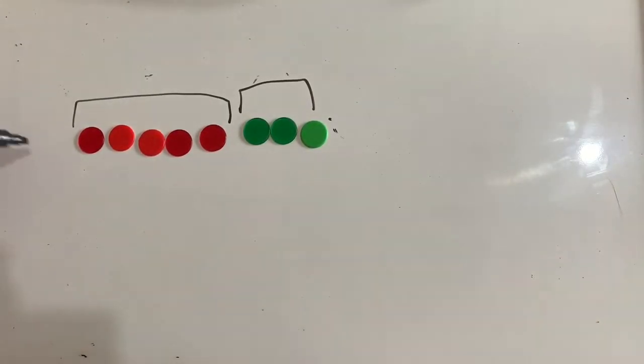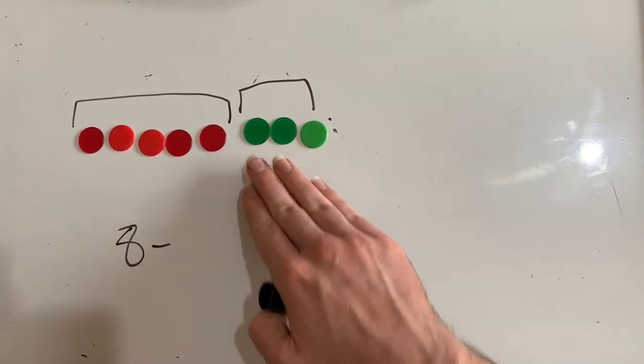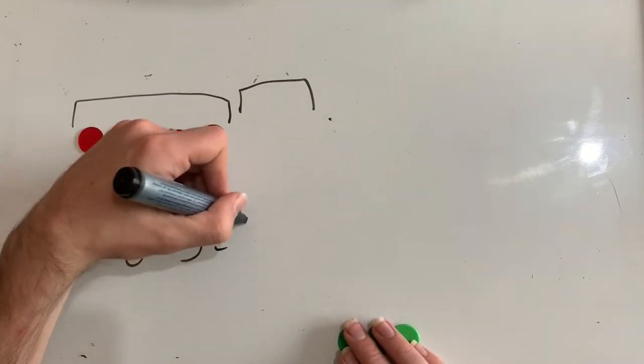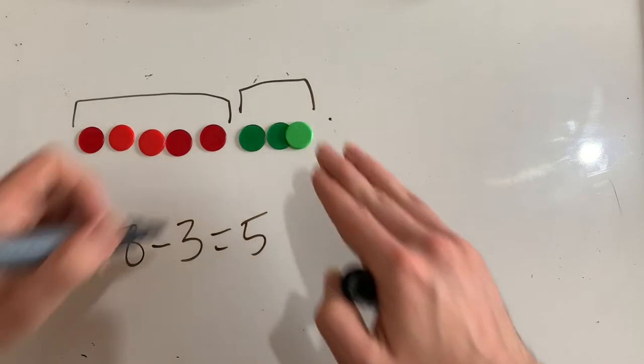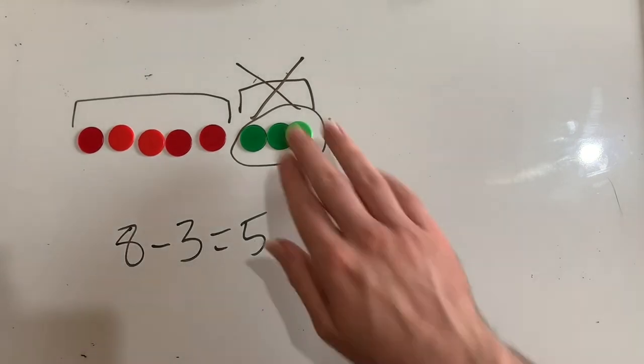So we can write that a little bit differently. So we've got eight here, eight minus, and I want to take away these three. So eight minus three equals five. So we have gotten rid of these three. These ones don't exist anymore. Eight minus three equals five.